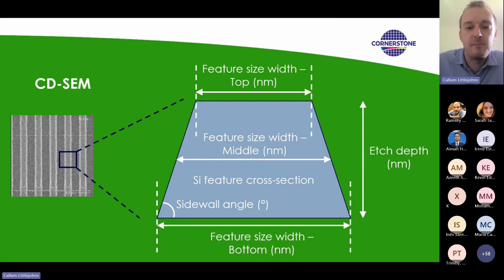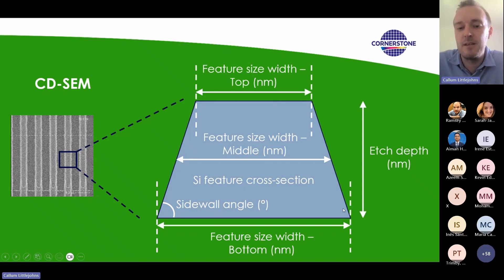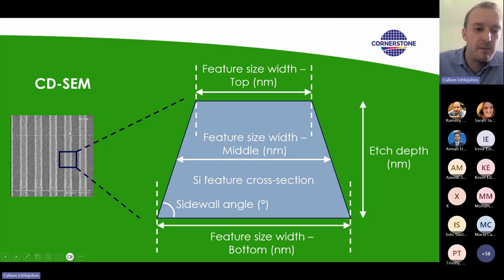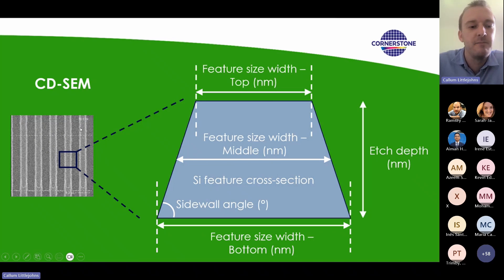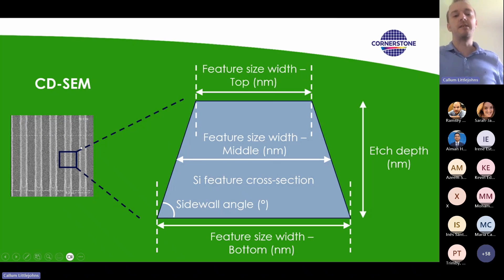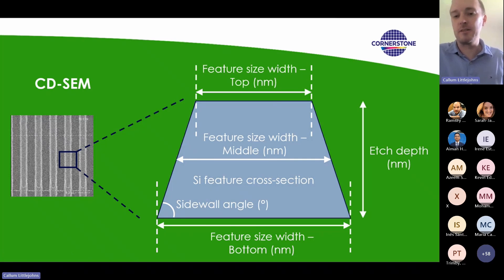I've exaggerated a cross-section profile you might get over a waveguide or grating structure. On the SEM image on the left, you'll see bright regions at the edge of the features — that's the sloped area. We can actually measure the top of the slope and the bottom of the slope by CDSEM, and then estimate the middle point, or the average width, of a device.